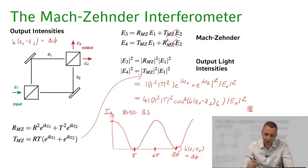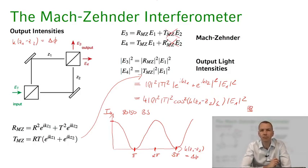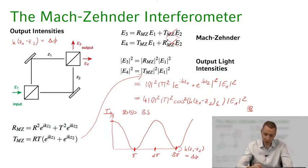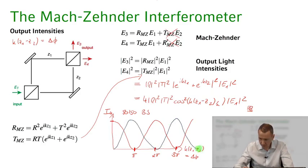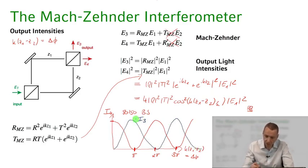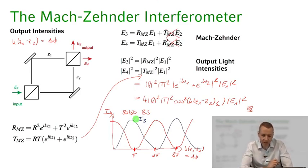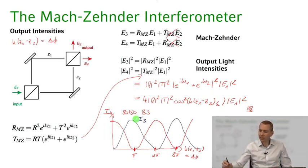What about the complementary detector on port 3? The sum of the intensities must always equal the input intensity, so the intensity on port 3 gives the complementary signal—just pi out of phase with the intensity on port 4. That's the classical result.